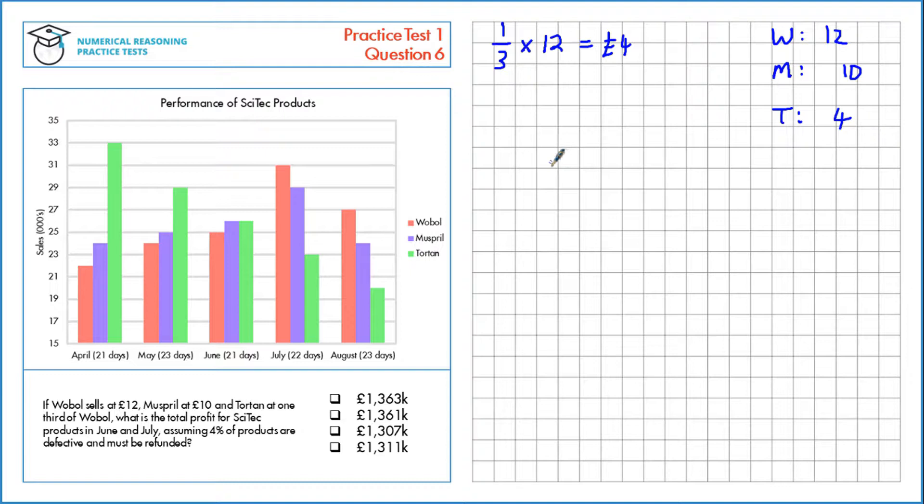Now let's figure out the sales figures for all the products. First for Wobol, in June and July we have the June figures of £25,000, plus July figures of £31,000.